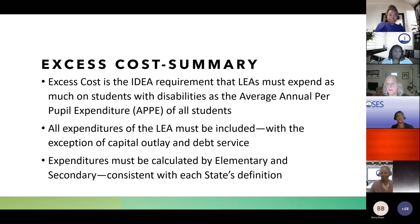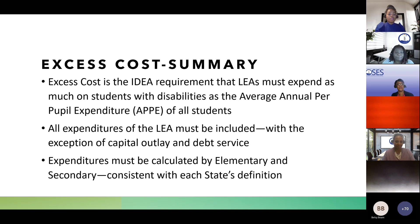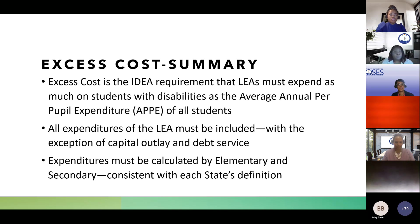Good morning, everyone. My name is Jessica Bodger. We're going to talk about the summary of excess costs. Excess cost is the IDEA requirement that LEAs must expend as much on students with disabilities as the average annual per pupil expenditure of all students. You will need all expenditure reports from state, local, and federal, but do not include debt service or capital expenditures. Expenditures must be calculated by elementary and secondary — elementary is no lower than kindergarten but no higher than grade 8; secondary is no lower than grade 7 but no higher than grade 12.